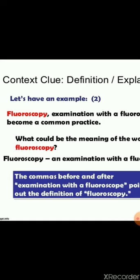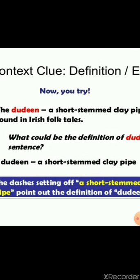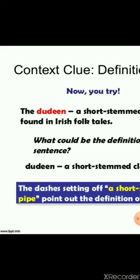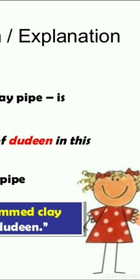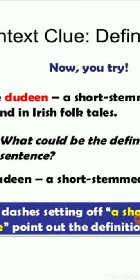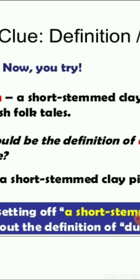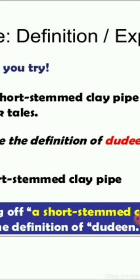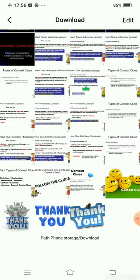Look at more examples. 'The dudane — a short stem clay pipe — found in Irish folk tales.' What is the definition of dudane? A short stem clay pipe. The dash is setting off the definition. As I told you, dashes, hyphens, semicolons, double colons — any of these can come. So if you see 'a short stem clay pipe' in the options, that is your answer. It is preceded by the dash. I hope you are understanding what I am saying.